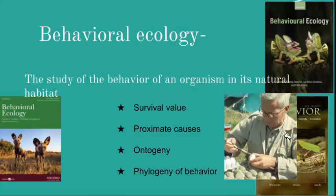As a control, he left other camouflaged eggs alone without eggshells nearby. He noted which eggs were found more easily by crows. Because crows could use the white interior of broken eggshells as a cue, they ate more of the camouflaged eggs that were near eggshells. Tinbergen concluded that eggshell removal behavior is adaptive — helpful in reducing predation, and thus increases the offspring's chance of survival.